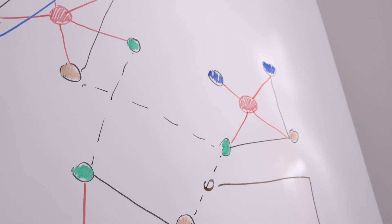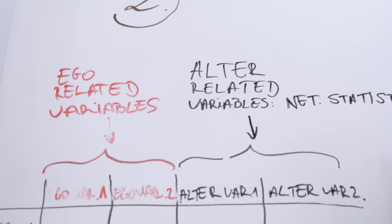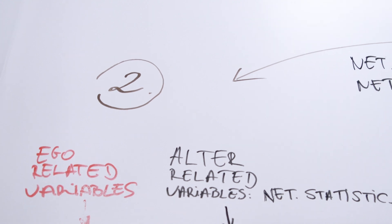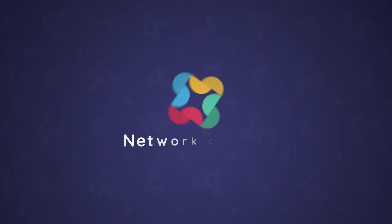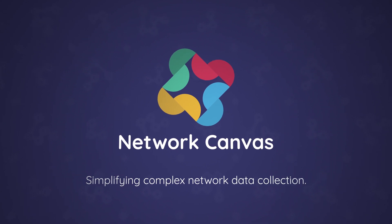When we want to understand what drives a complex behavior or causes one group to experience the world differently from another, we need to look to the structural contexts in which people are embedded. This is why we created Network Canvas, a collection of software designed to simplify complex network data collection.